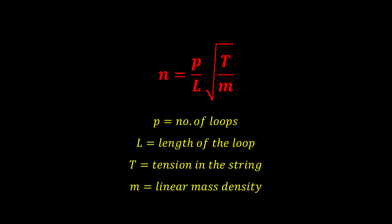Using the formula n equals p divided by L times square root of T divided by m, we can find the frequency of vibrations. Here, p corresponds to the number of loops, L corresponds to the length of the loop, T corresponds to the tension in the string, and m corresponds to the linear mass density of the string.